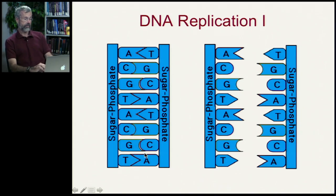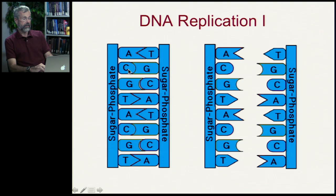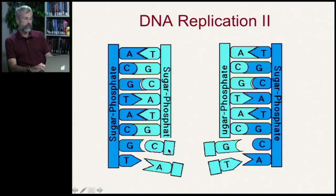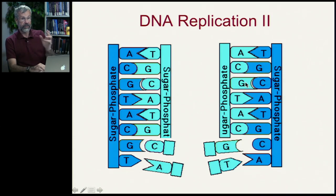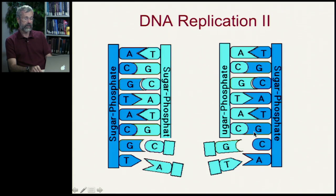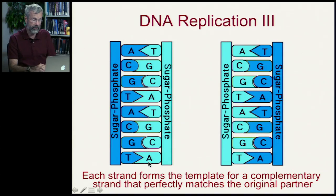Here's what happens in replication: we have our double-stranded molecule with its sugar-phosphate backbone and Gattaca sequence. The complementary partners on the other side get separated first. Then the enzymes deliver single nucleotides and attach them to the growing chain using the pairing rule — C pairs with G, A pairs with T — on both strands simultaneously. Each strand forms the template for a complementary strand that perfectly matches the original partner.